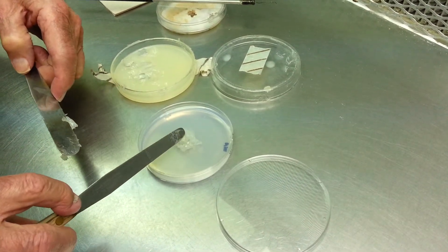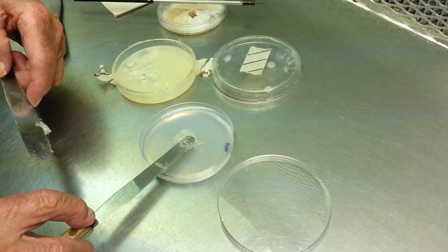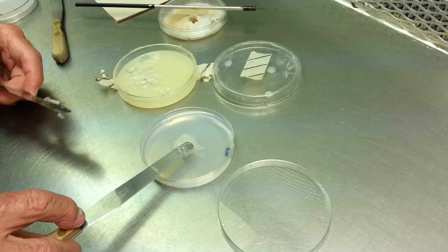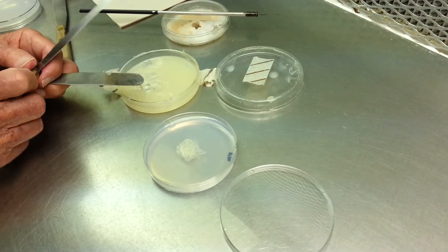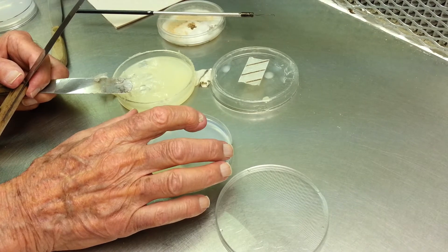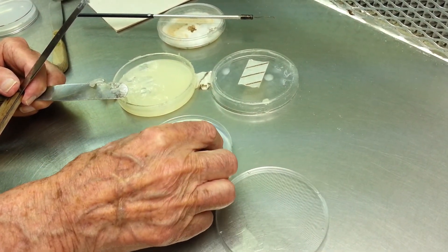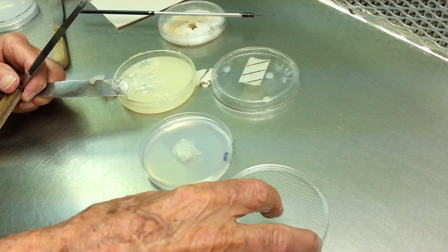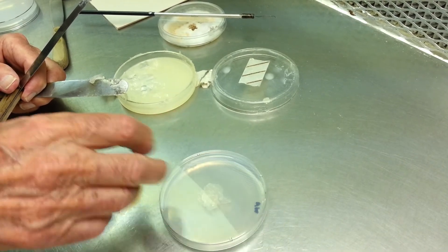And it will grow through the Vaseline? It will go through the Vaseline, and onto the culture. And when it grows out into the culture, we take a piece from the periphery of the culture and transfer it. That's the Vaseline method.